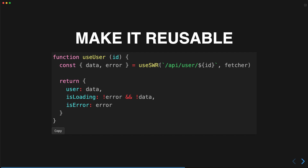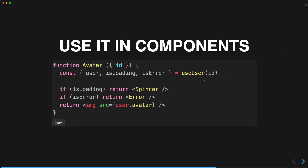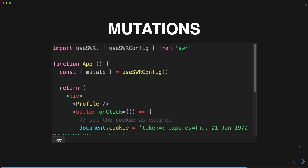You can also make it reusable — here we have a useUser function that wraps useSWR and takes an ID parameter. We can then use that hook inside a component. For example, an avatar component takes an ID prop, passes it to our hook, displays a spinner while loading, shows an error if there is one, or otherwise displays the image.